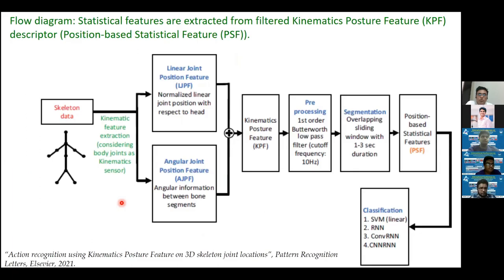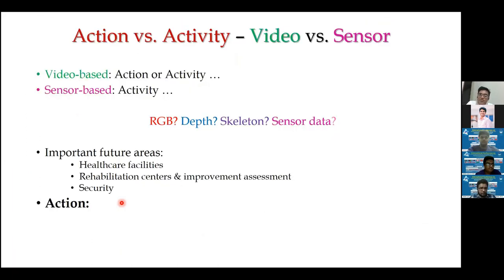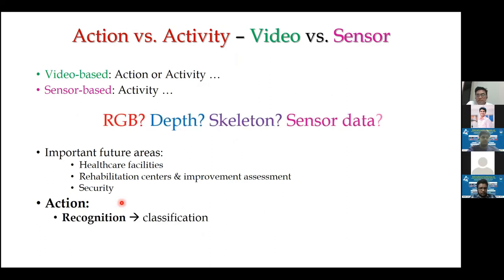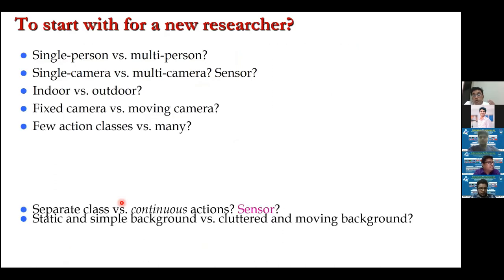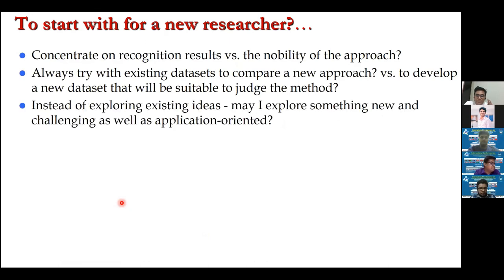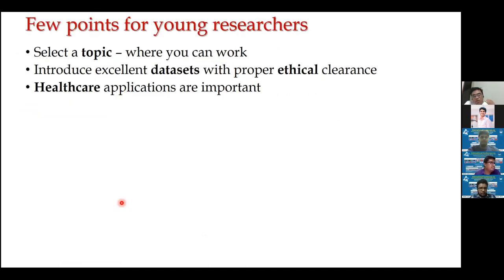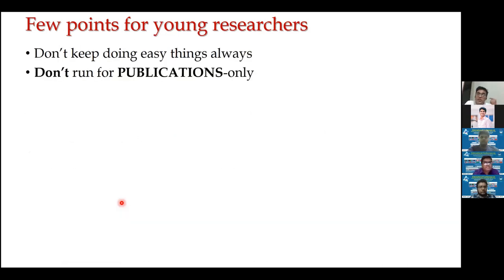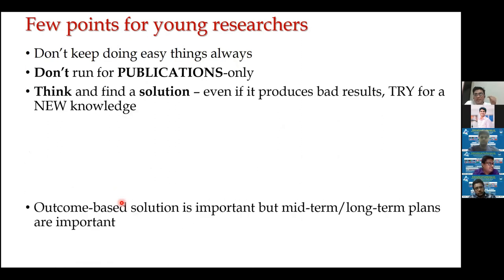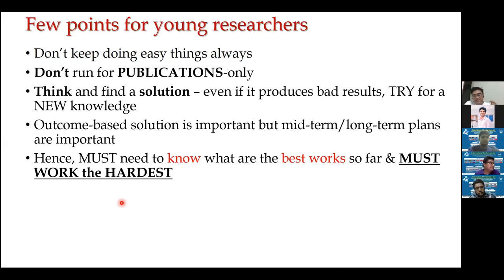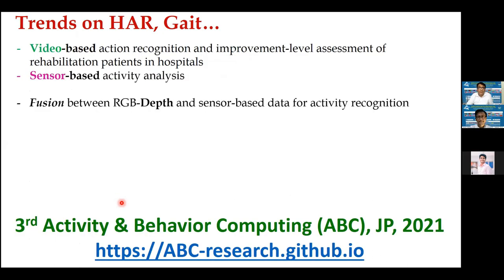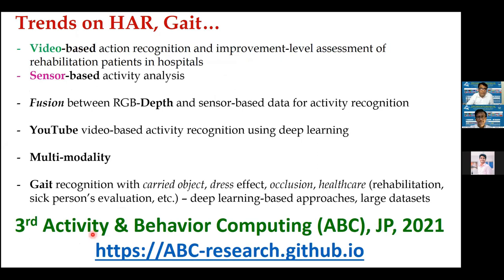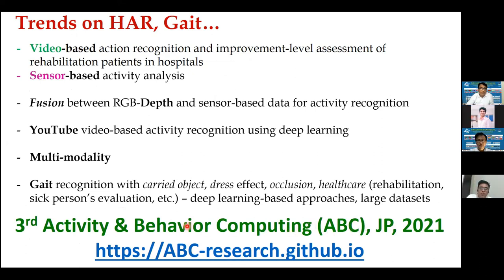To conclude: action and activity recognition based on video, skeleton, or different kinds of sensors are very important with many applications — but don't focus only on classification, try to go for prediction, evaluation, and scoring. Find a new research area where you can implement something new that you can do with your available resources at home — your processor and other tools. Hard work is most important. I would also like to invite you all to submit papers to the upcoming 3rd Activity and Behavior Computing (ABC) conference — the deadline is about two to three weeks away, so if you are working on human activity and behavior, please consider submitting.